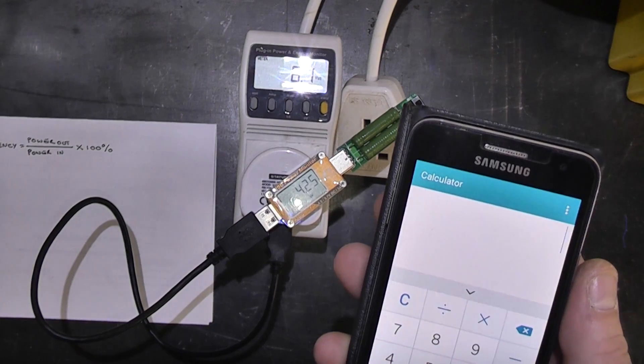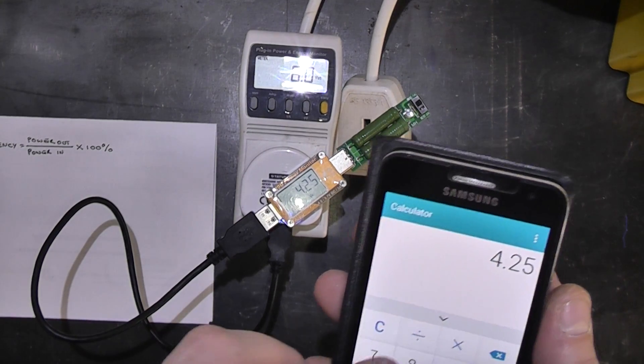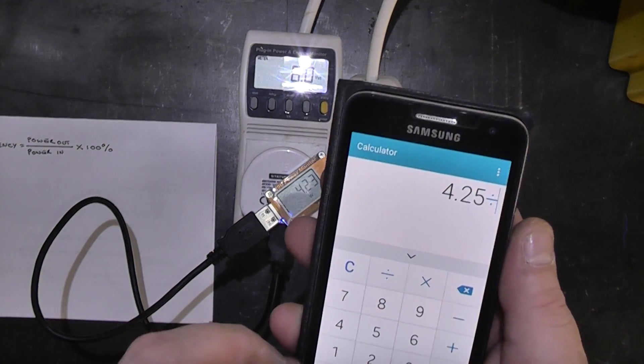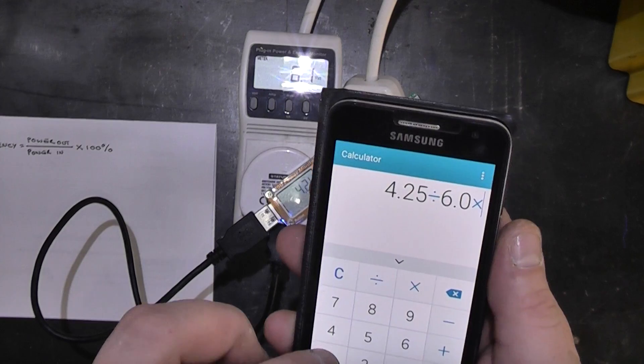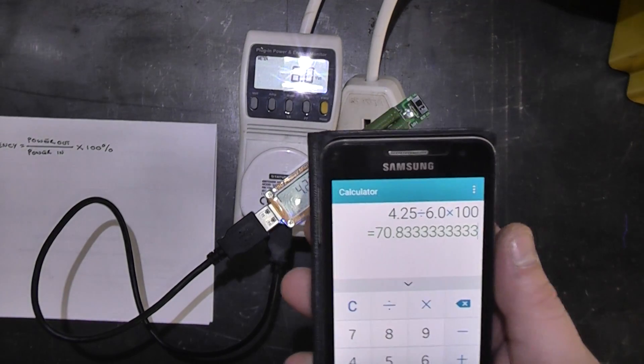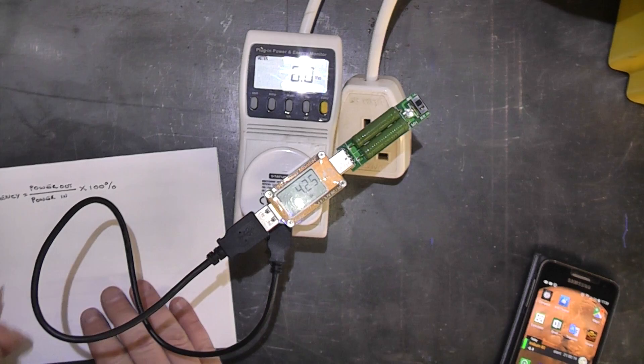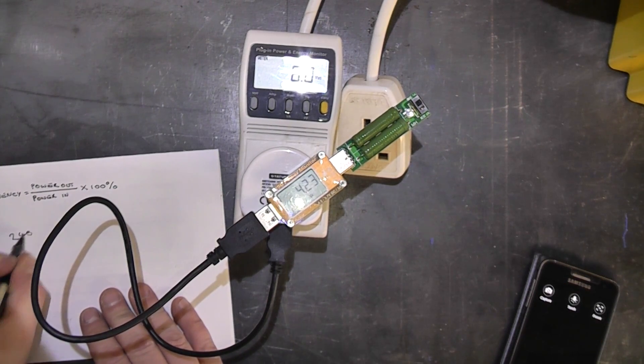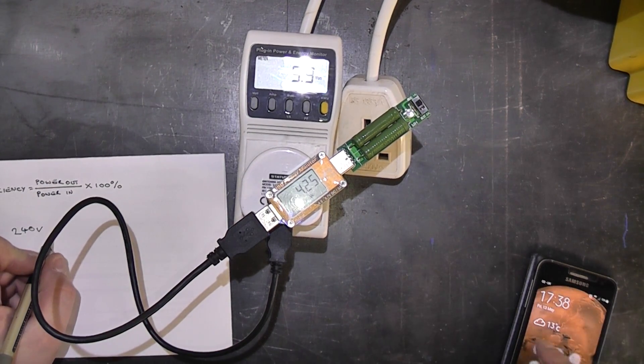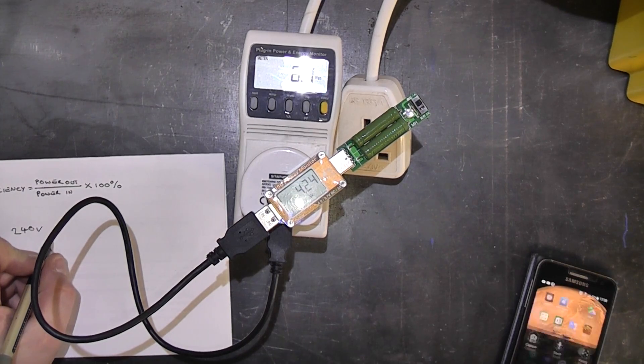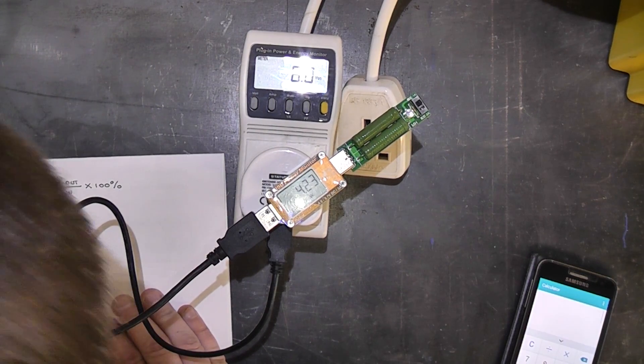4.25 divided by 6. And it's times 100. So it's 7.83 so let's say it's 71 percent efficient so 240 volts. Oh sloppy handwriting. What does it again? So it's 7.83 so let's say it's 71 percent.